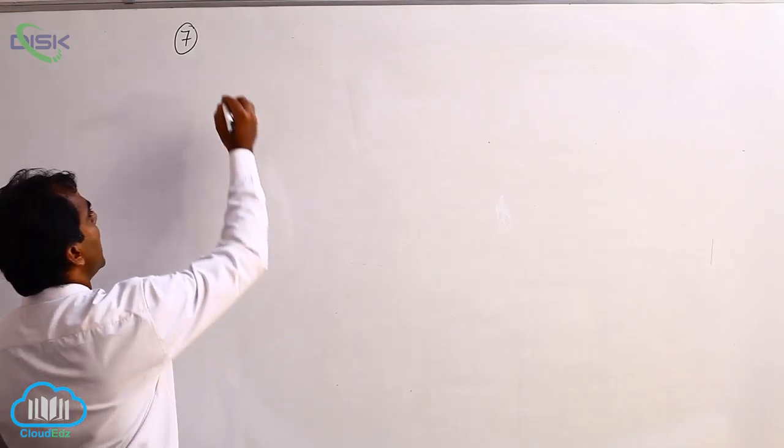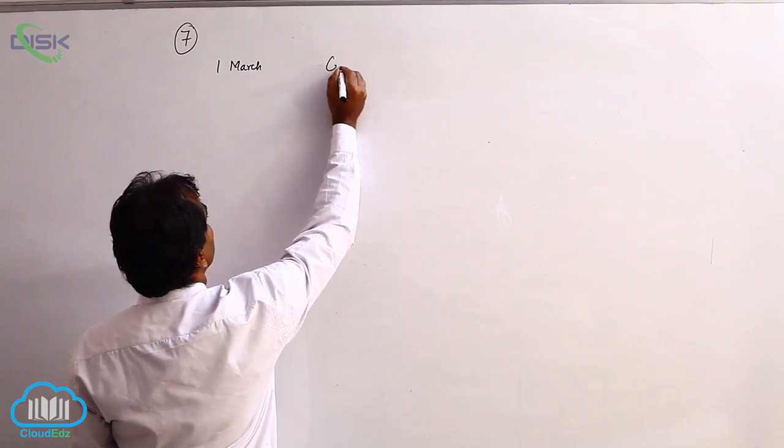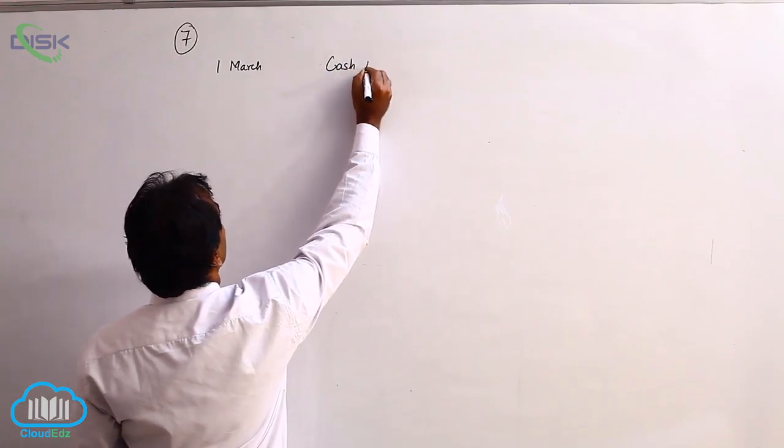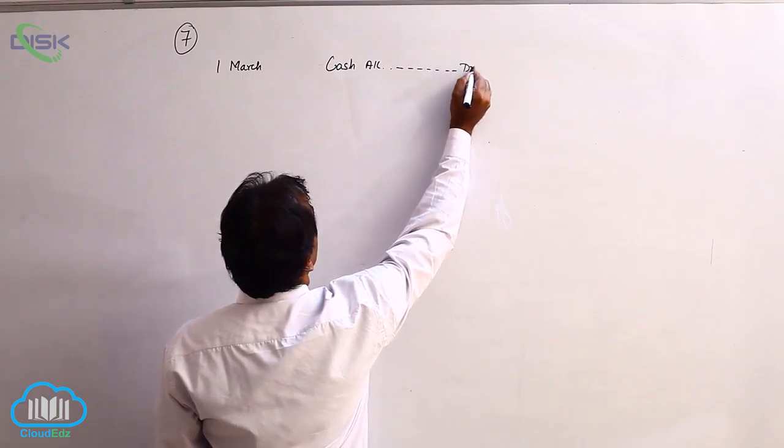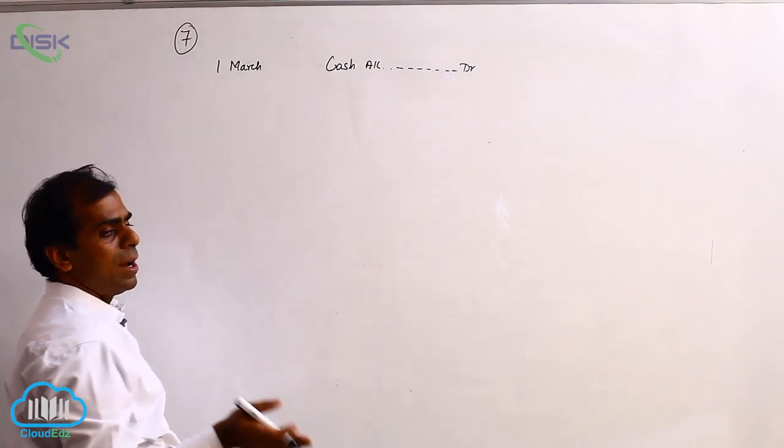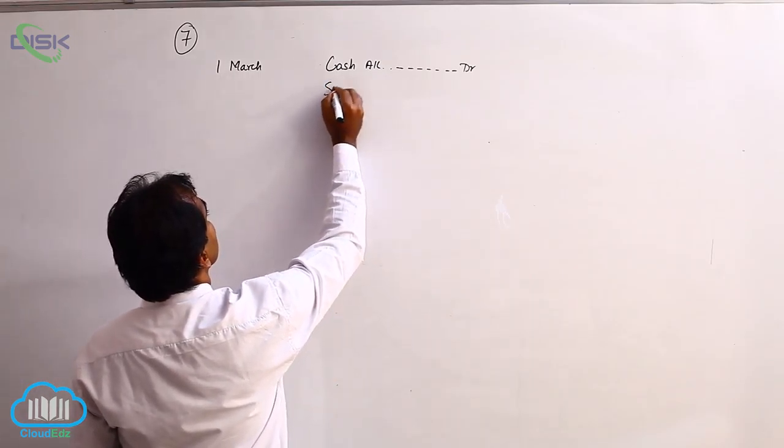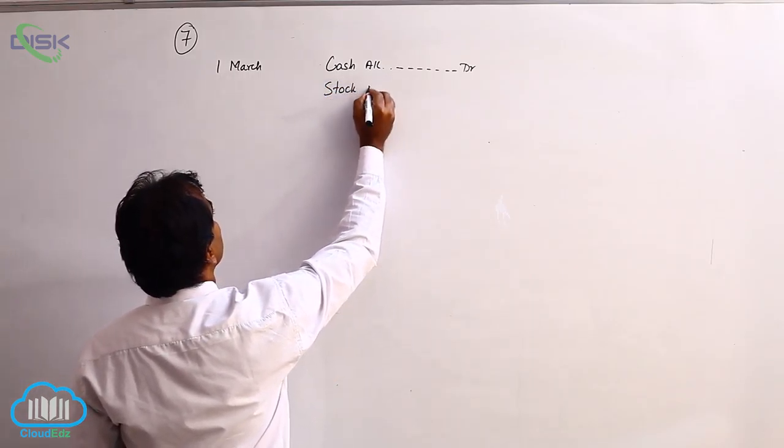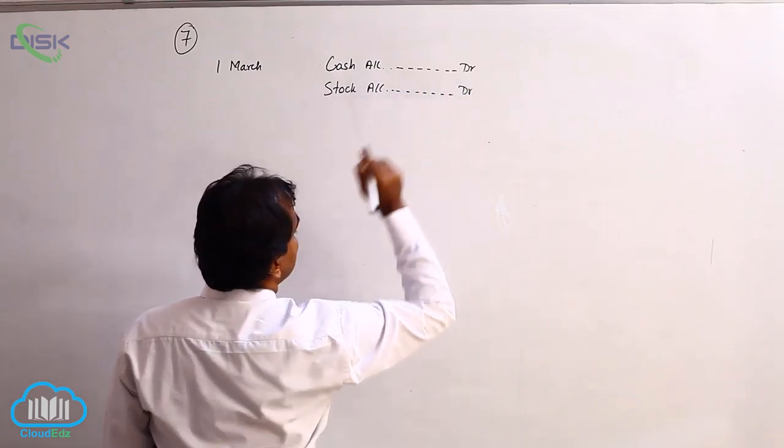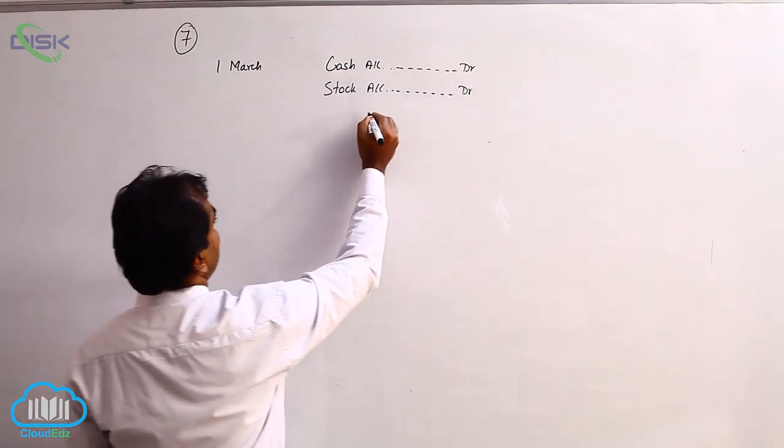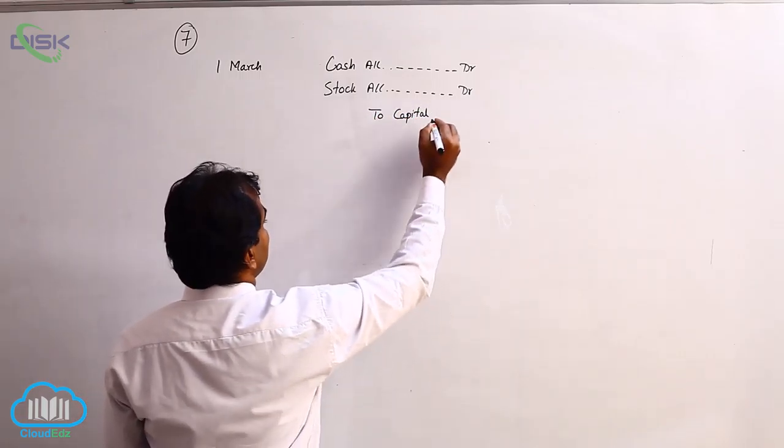On 1st March, we have the business getting cash. Cash being a real account, so we debit it because it is coming in or it is existing. All assets have to be debited, that is another rule to remember. Then stock, you can say existing assets, all assets we show debit balance. Similarly, the owner, that is capital, who is the giver of this, we are crediting.